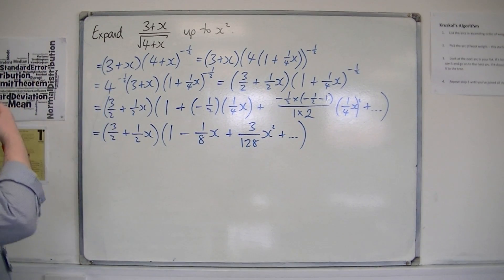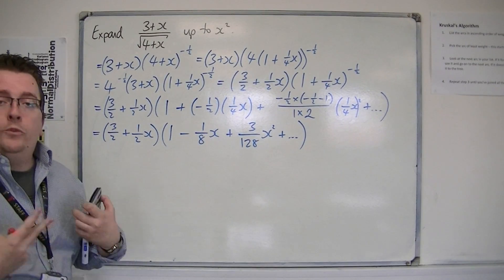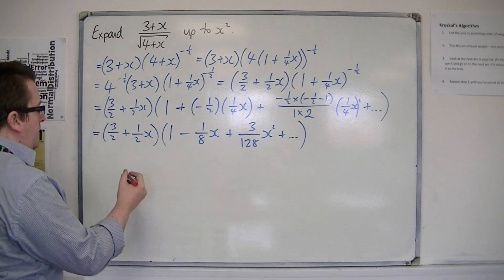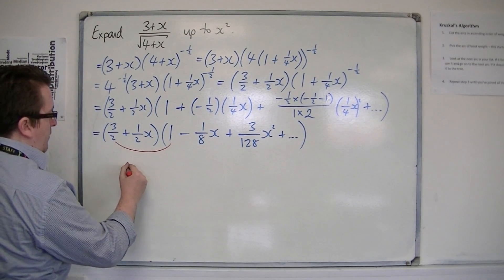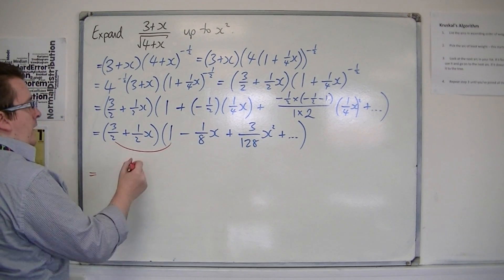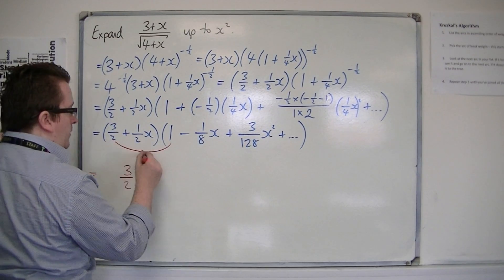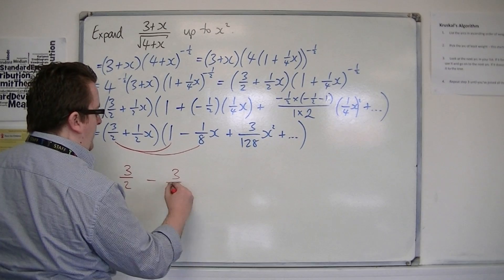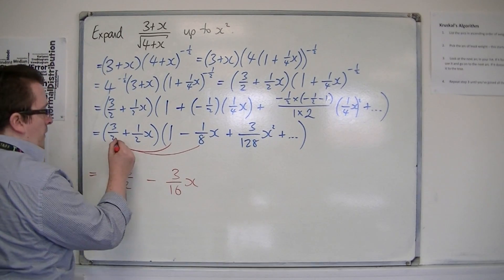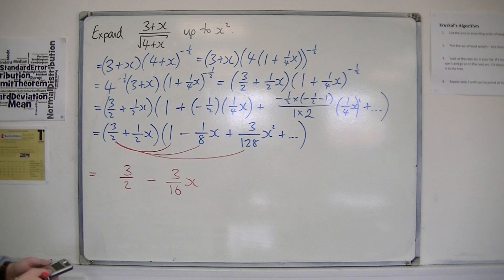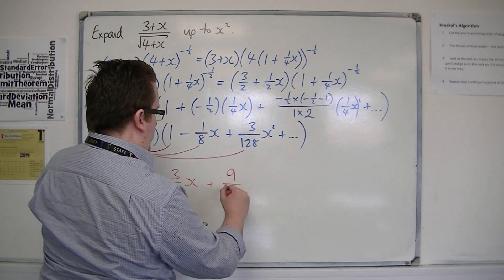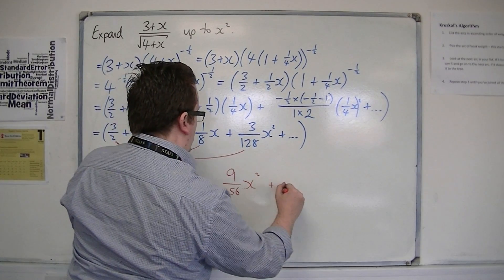Now we want to multiply these brackets out — expand them — but only up to the x squared term. So I've got 3/2 times 1, giving 3/2. Then 3/2 times −1/8 gives −3/16 x. Then 3/2 times 3/128: that's 3 over 128 times 3, divided by 2, giving 9 over 256 — so plus (9/256)x squared, plus other terms.